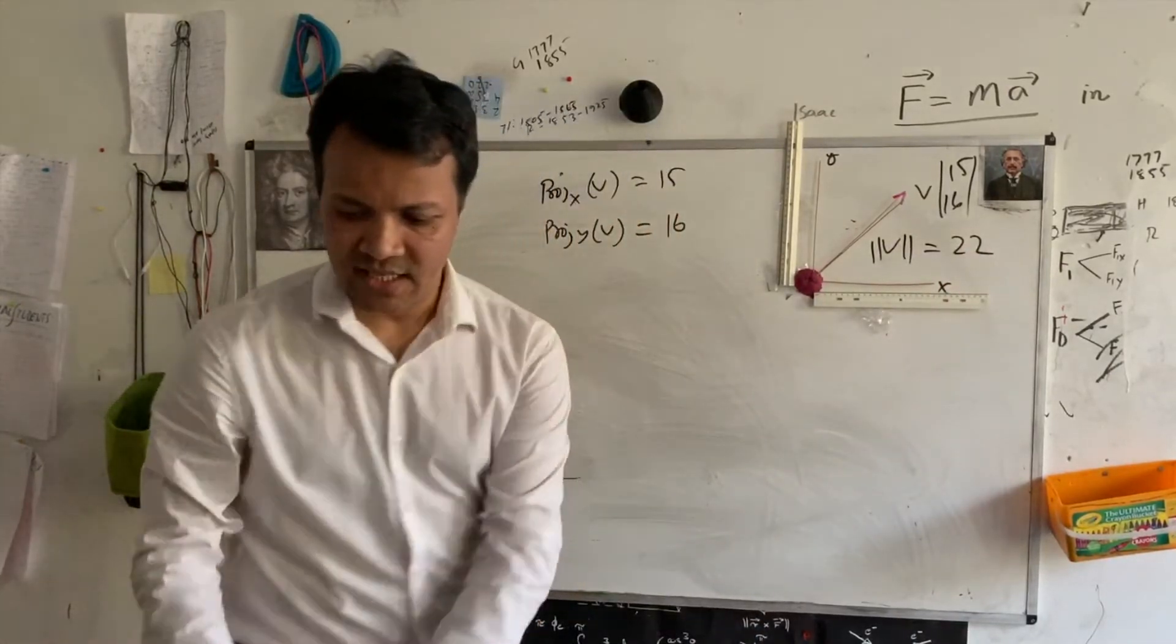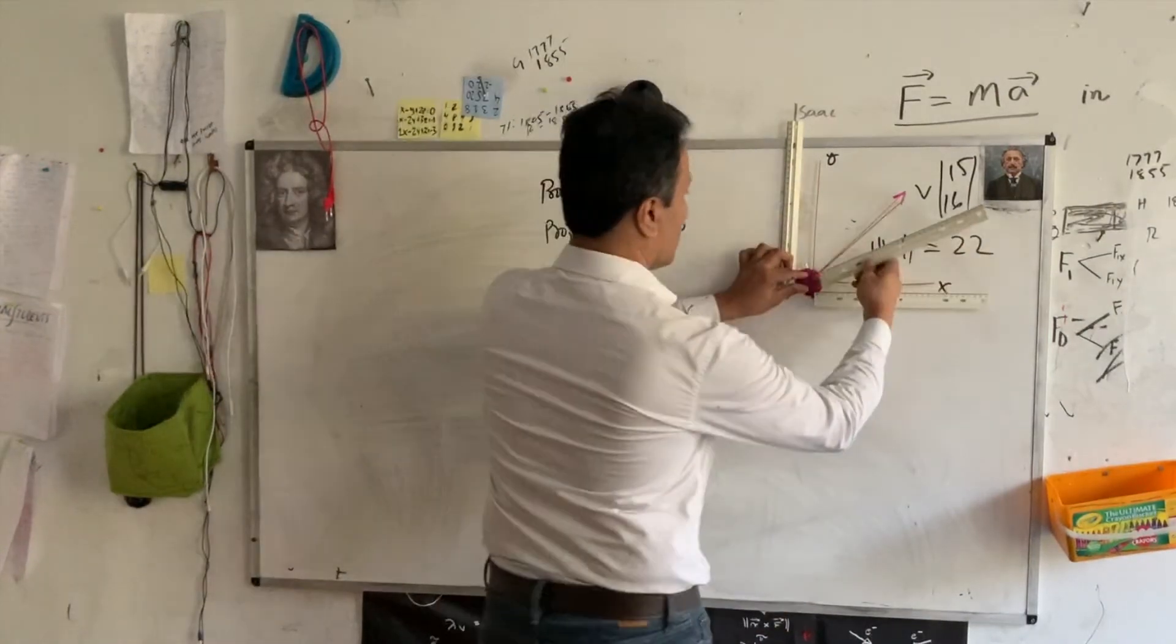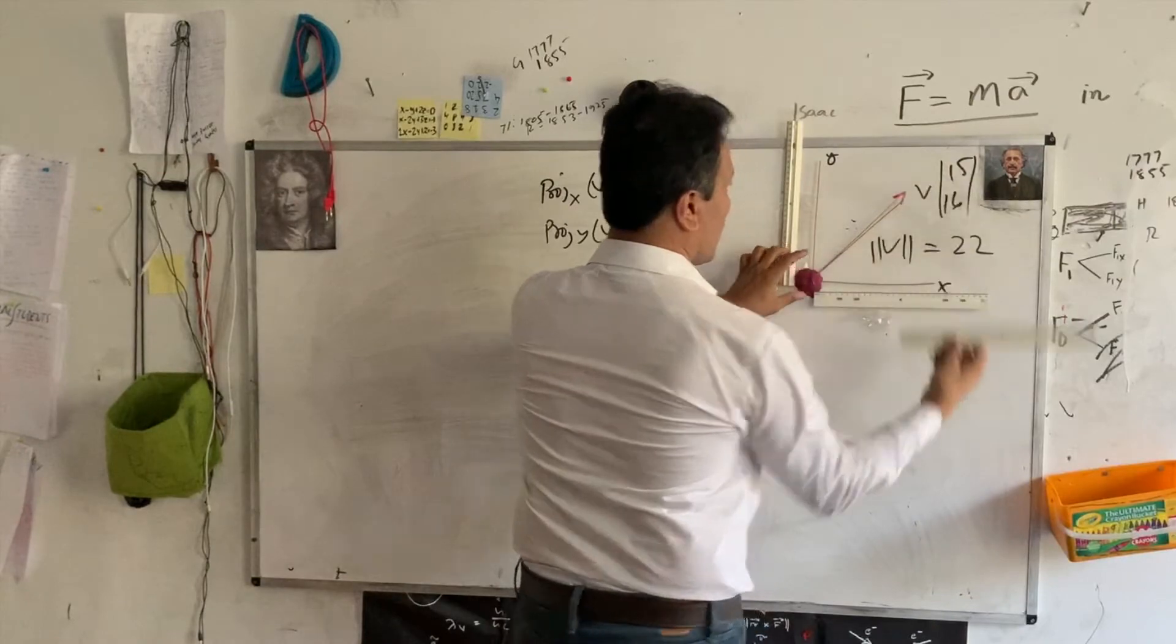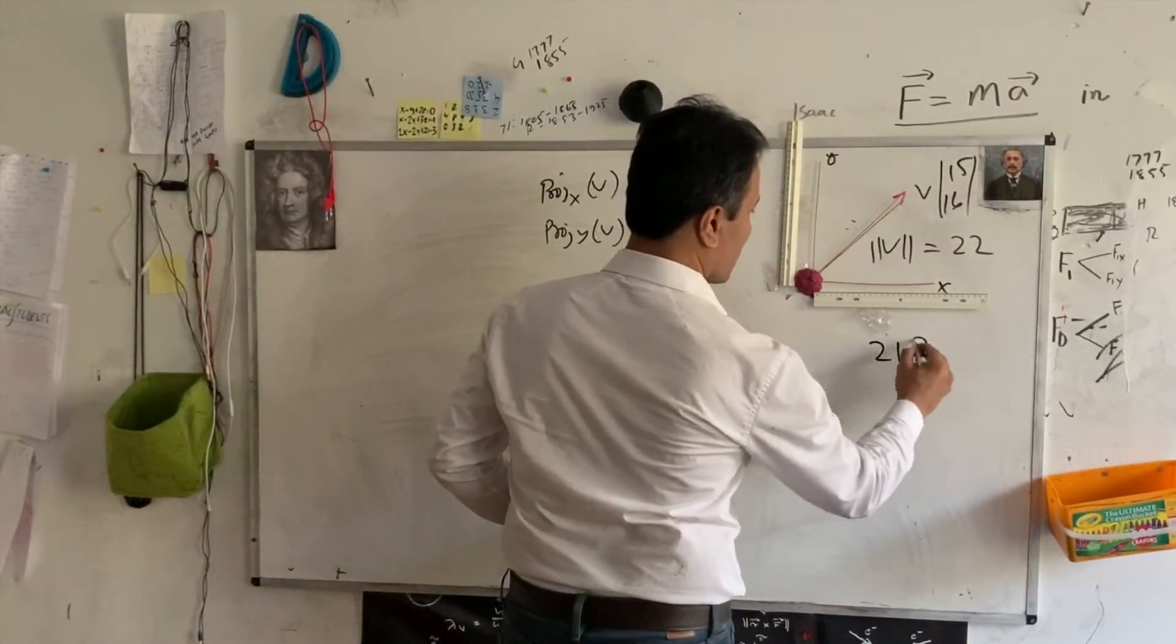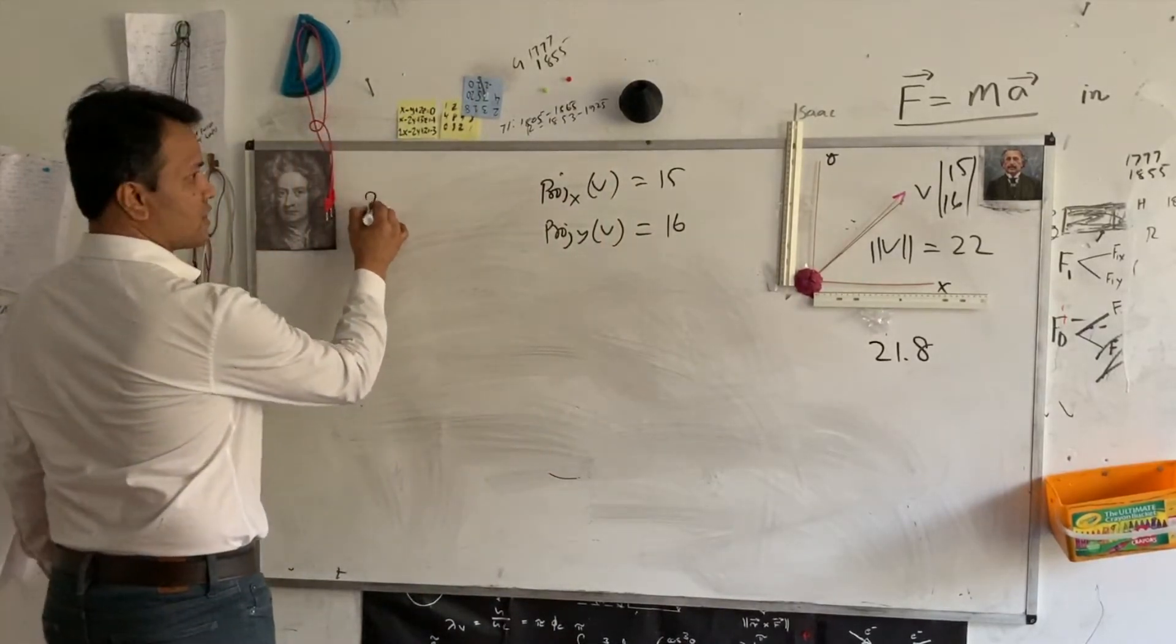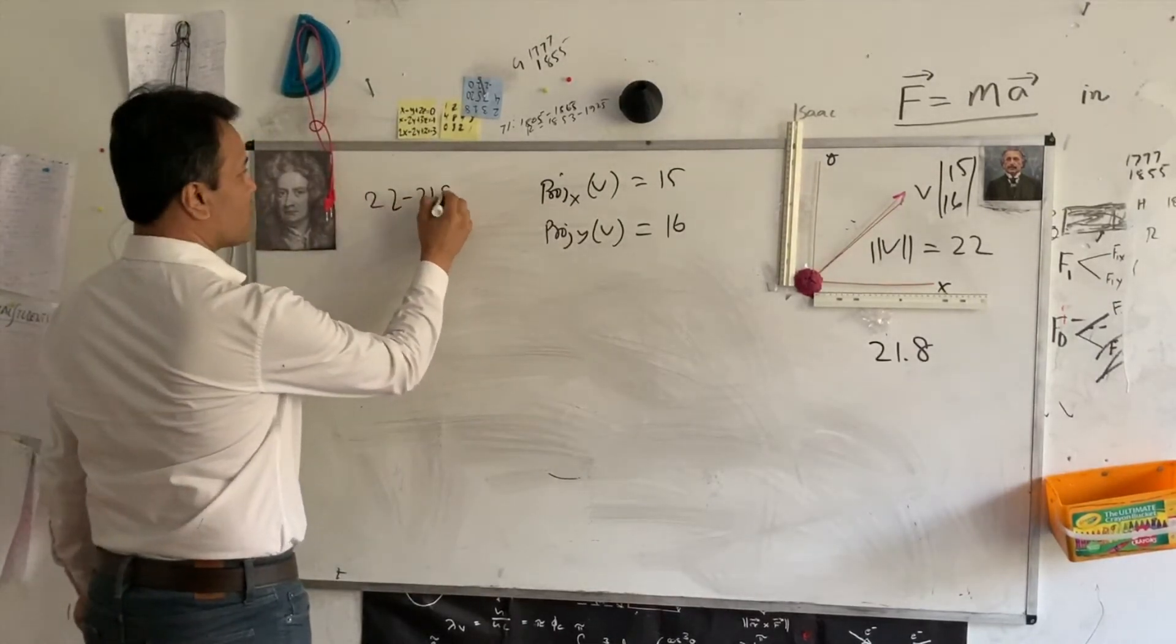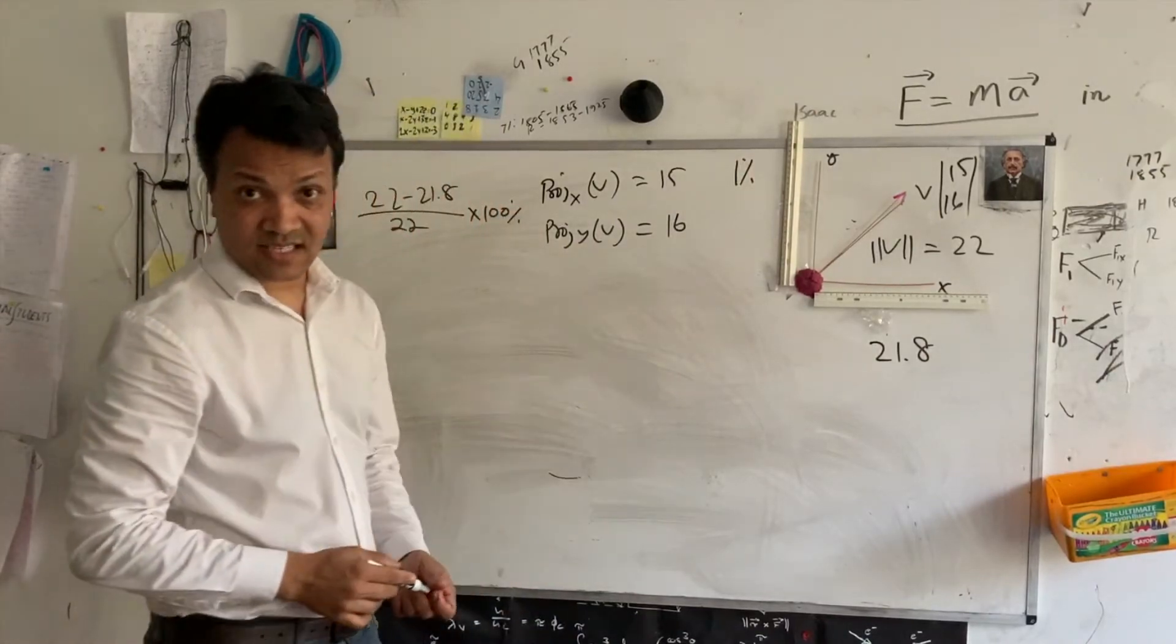Now, we can take another identical ruler to find how accurate it is. This is 21.8. So, this is 21.8. So, we can find the error. So, 22 minus 21.8 divided by 22. One percent error is acceptable.